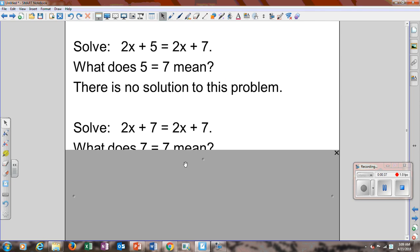This is your review, by the way, or our discussion. What about 2x plus 7 equals 2x plus 7? We would solve this one by subtracting 2x from each side. You would get 7 equals 7. When does 7 equal 7? It would be always.